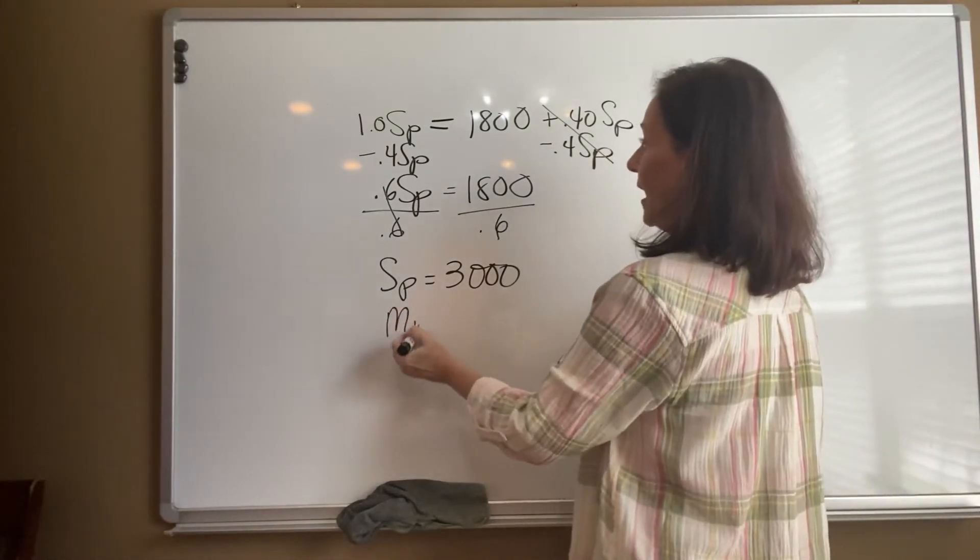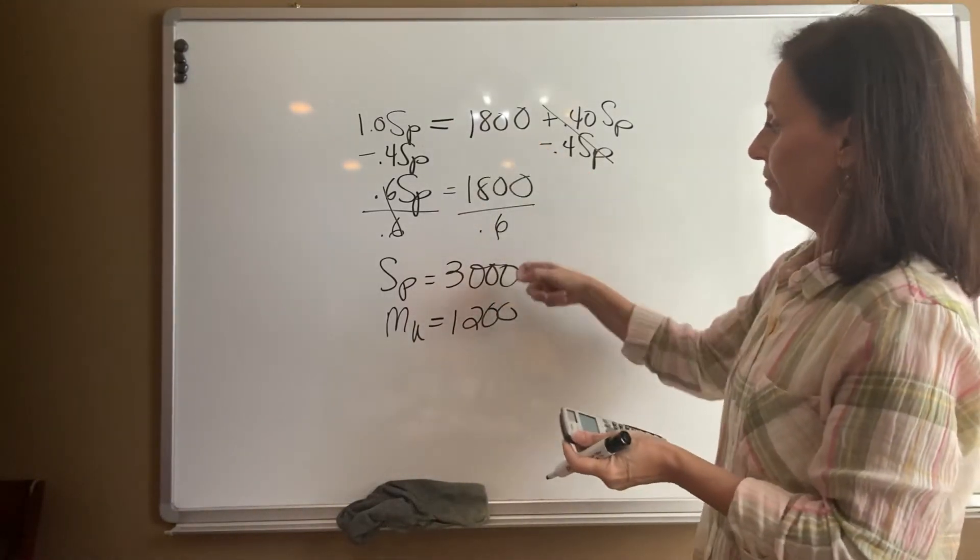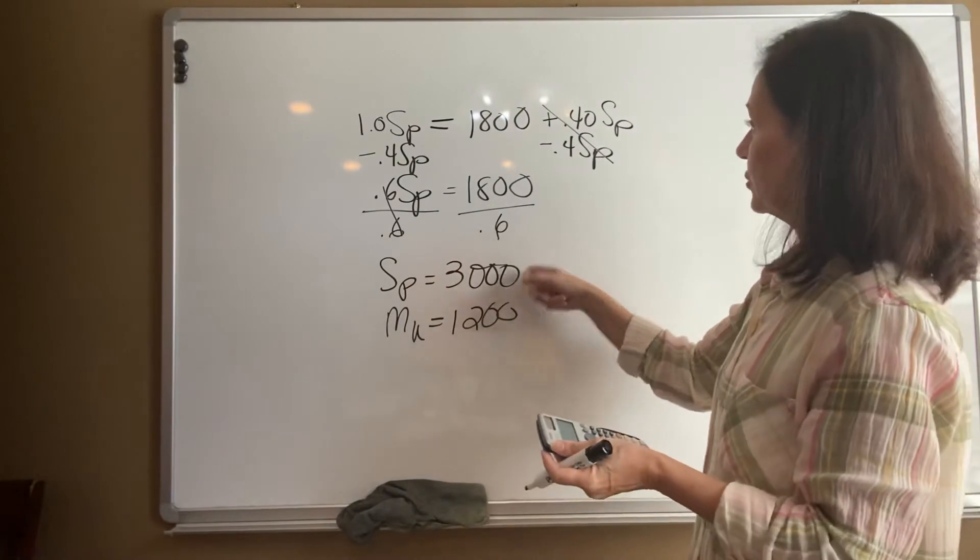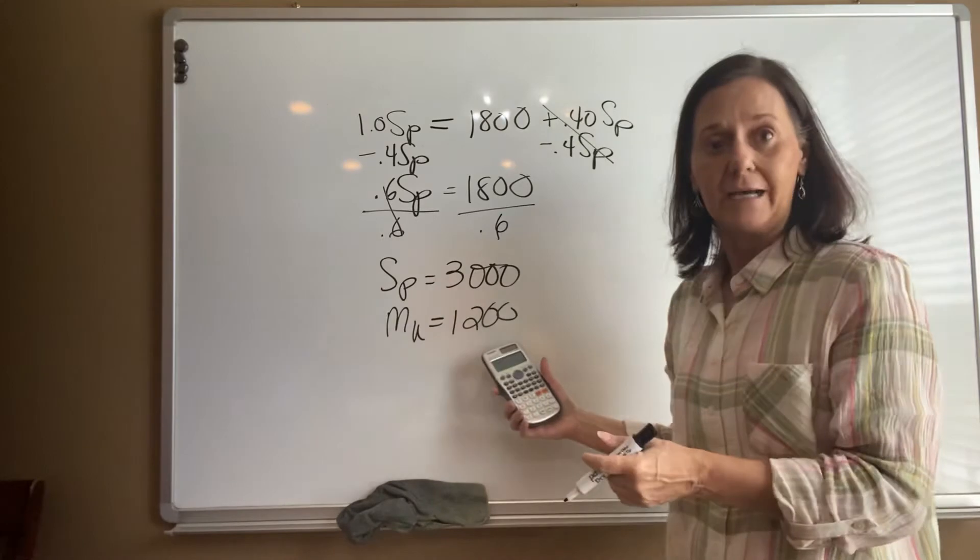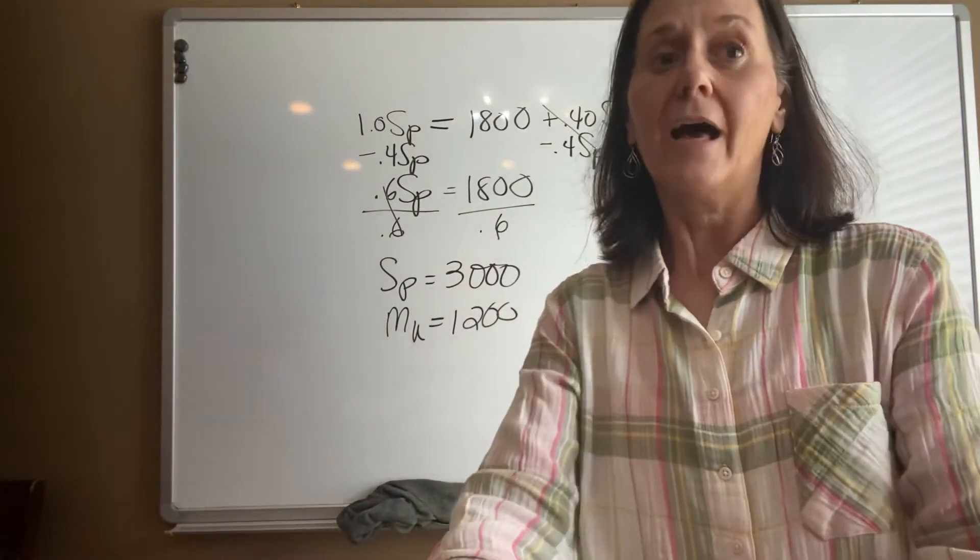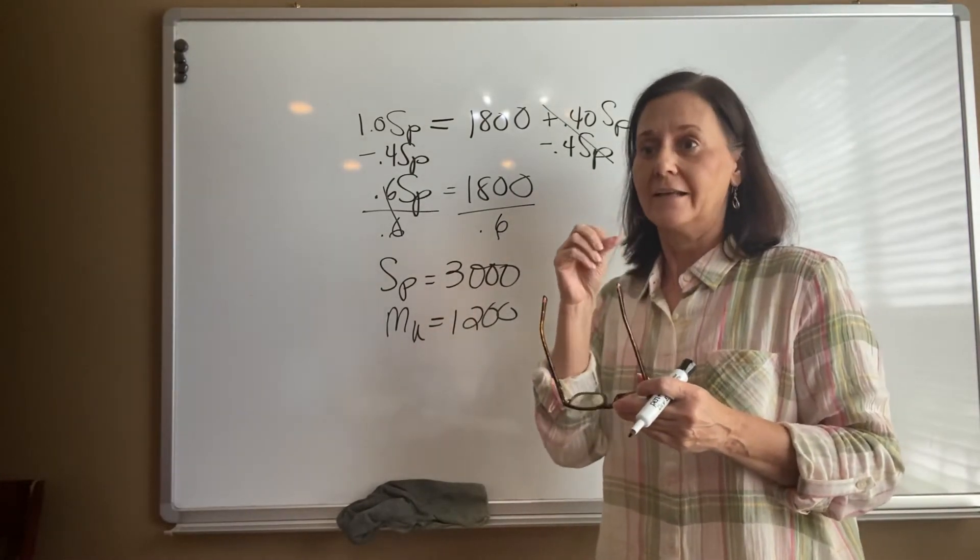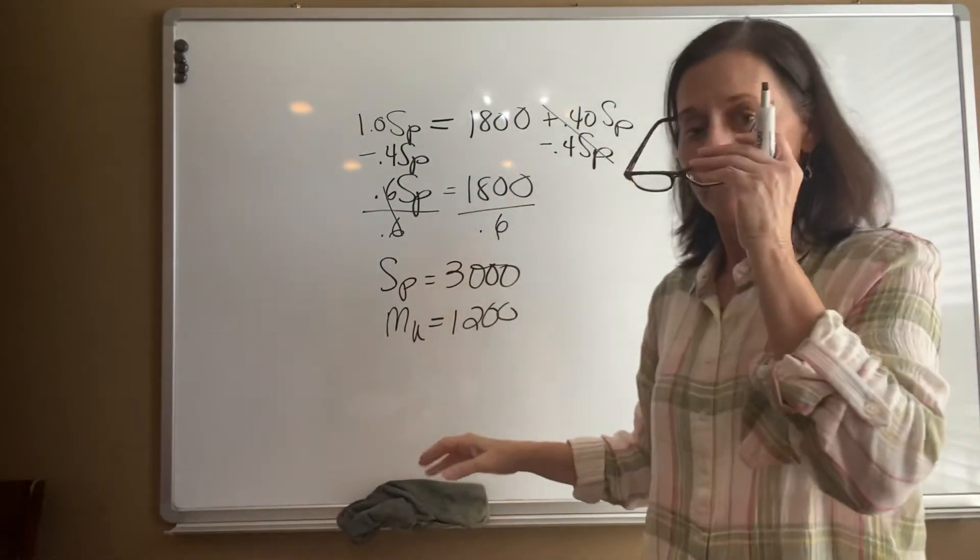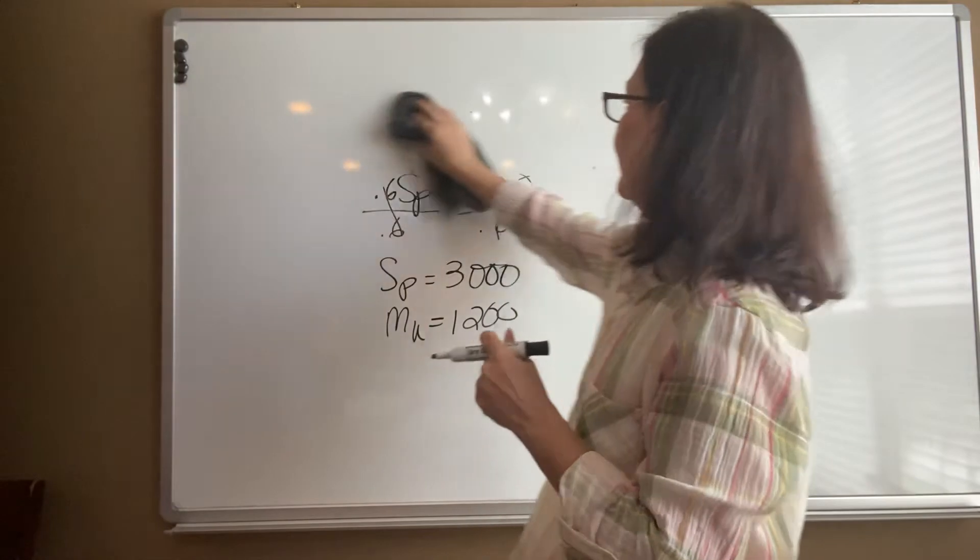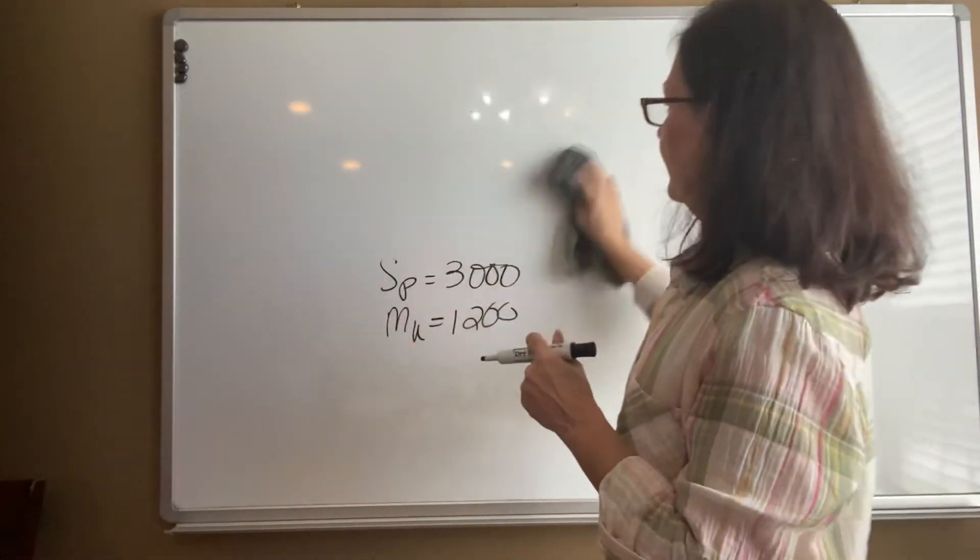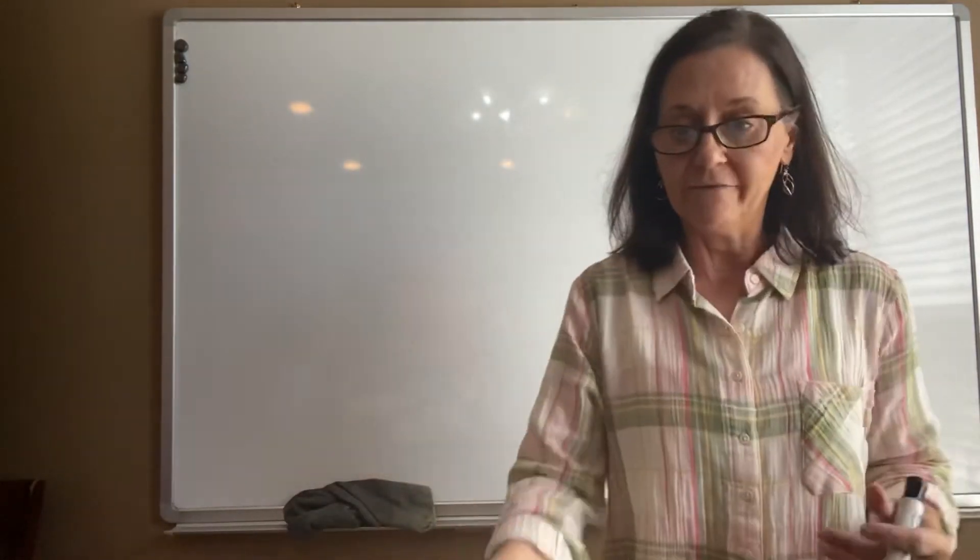So their markup has to be 1,200 because 1,200 plus 1,800 is 3,000. So I'm going to check myself. Does 3,000 times 0.40 equal 1,200? And it does. So they're making a lot of money off of this. The sharks on Shark Tank would be excited. Have you ever watched Shark Tank? That's entrepreneurs. They pitch their product to try to get an investor.